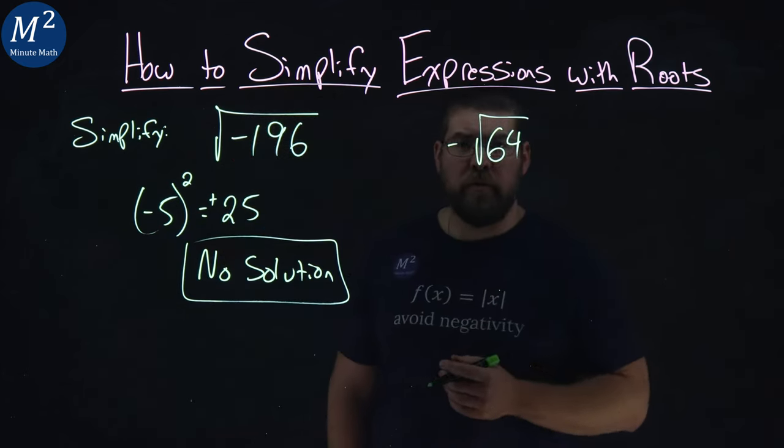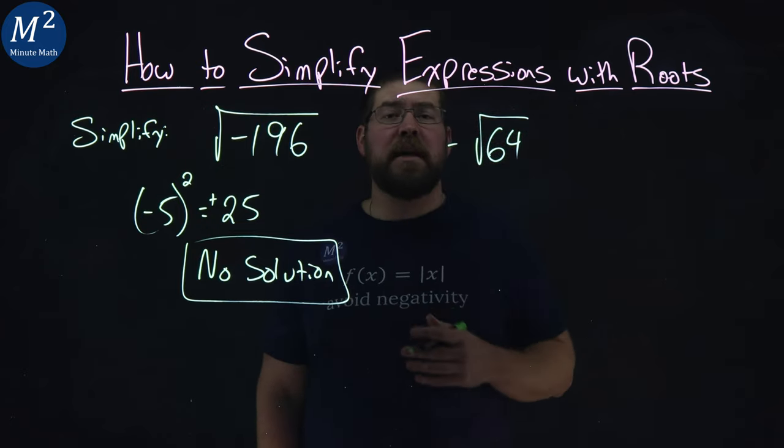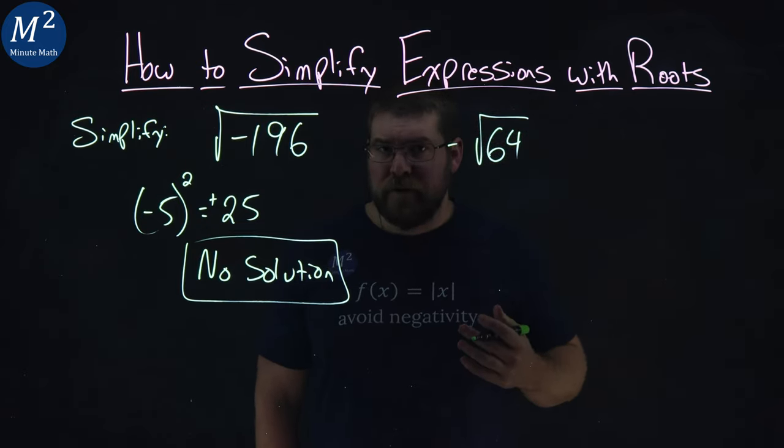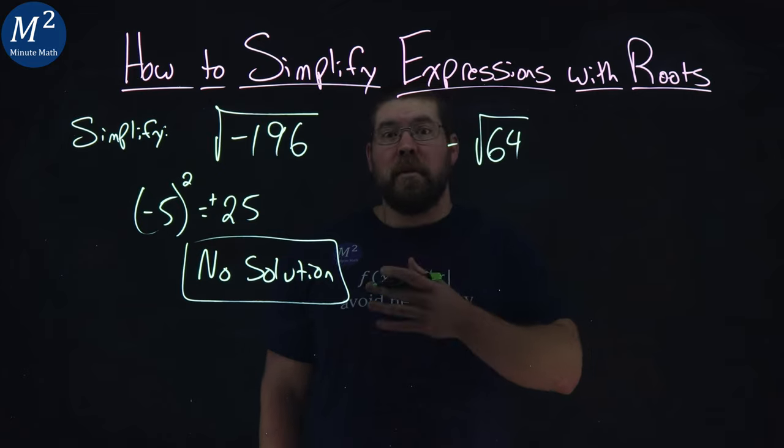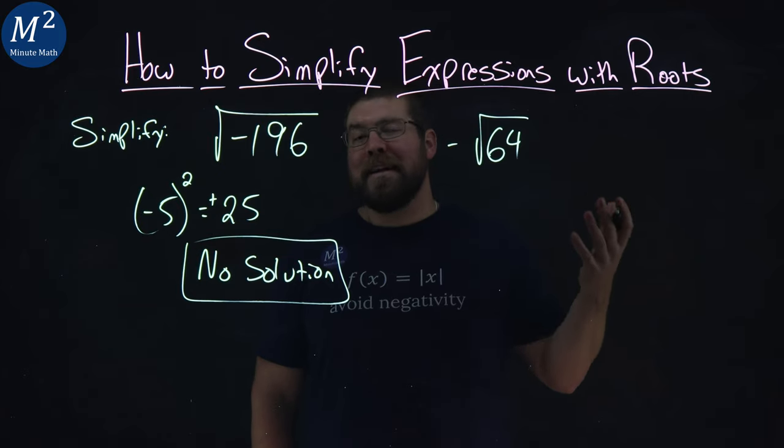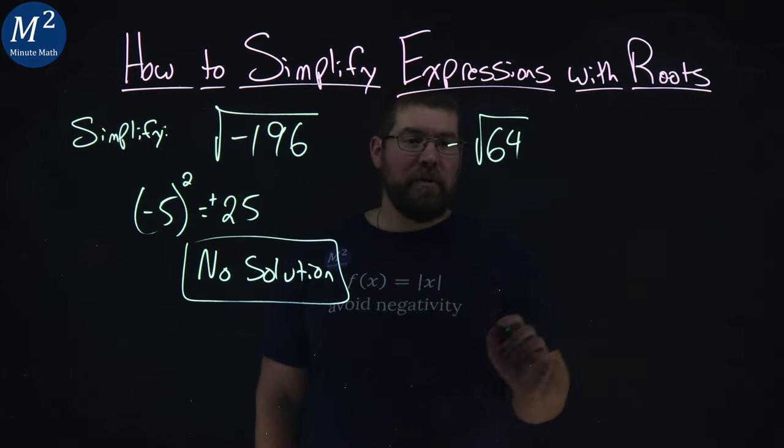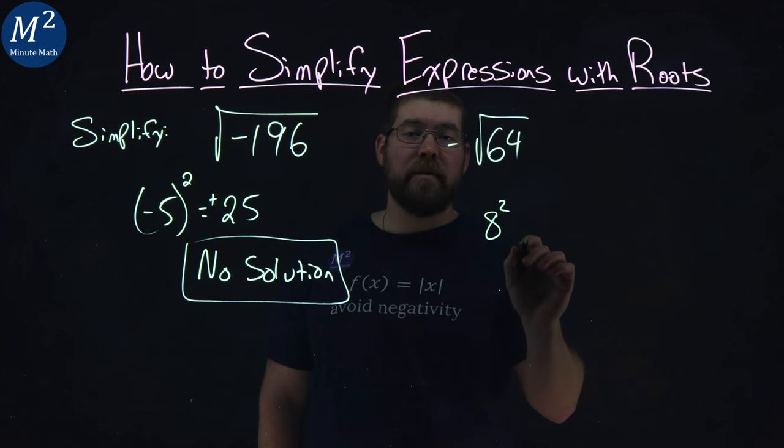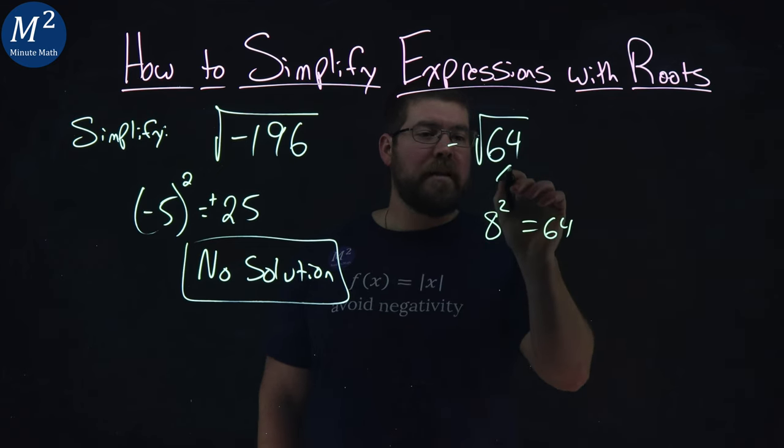Now, the second one's a little different. Our negative sign is outside the square root, and we can do this. So we have to ask ourselves what two numbers, or what number multiplied by itself, squared, gives me 64, and that's going to be 8 squared. Break it down, a little factor tree: 8 times 8 gives me that 64.